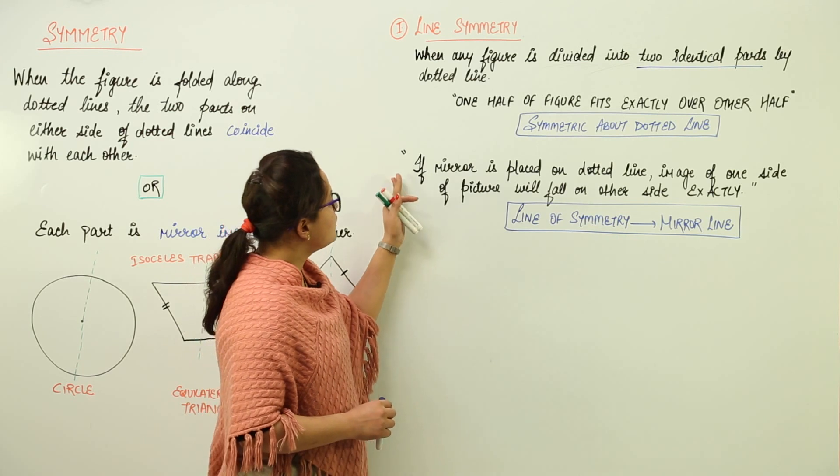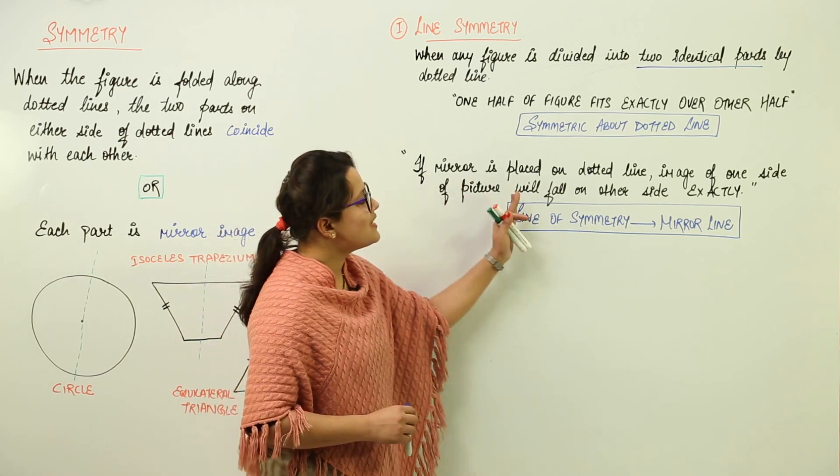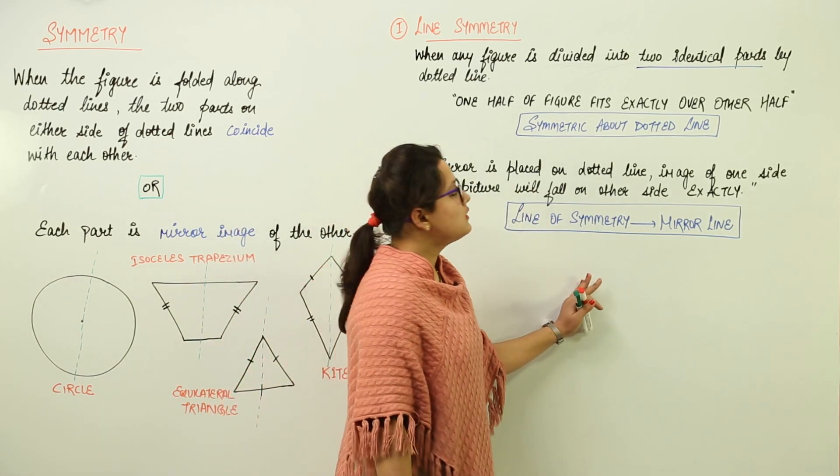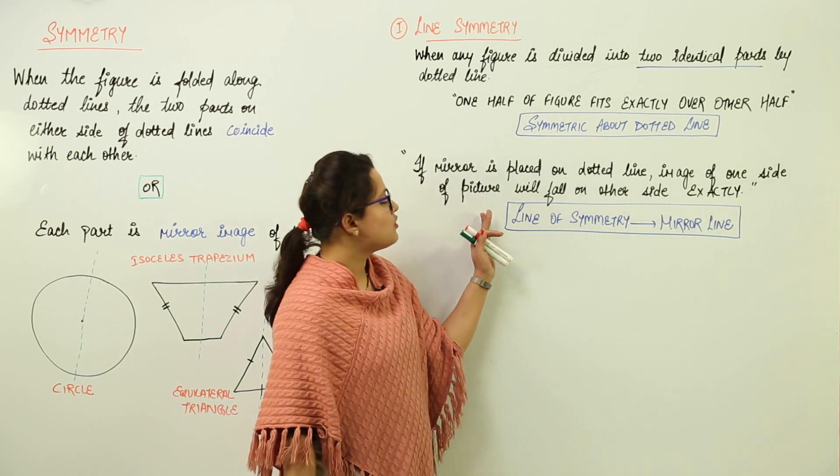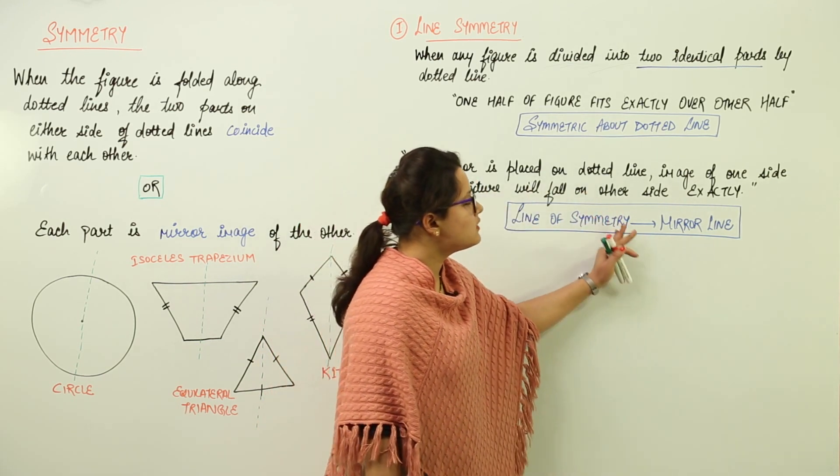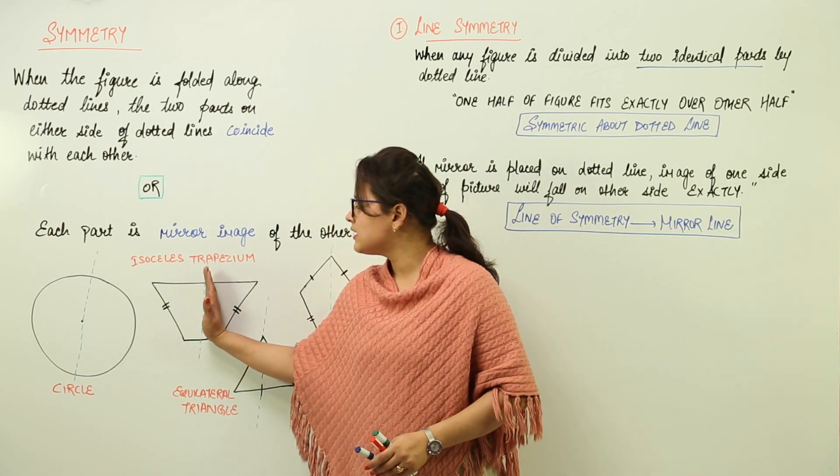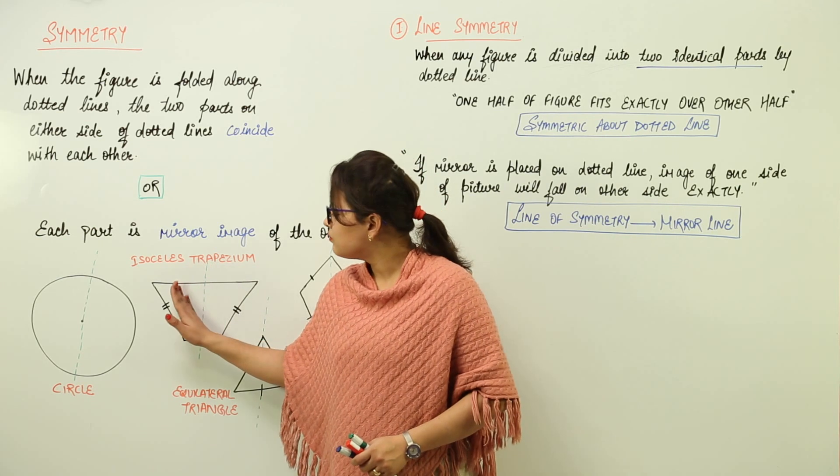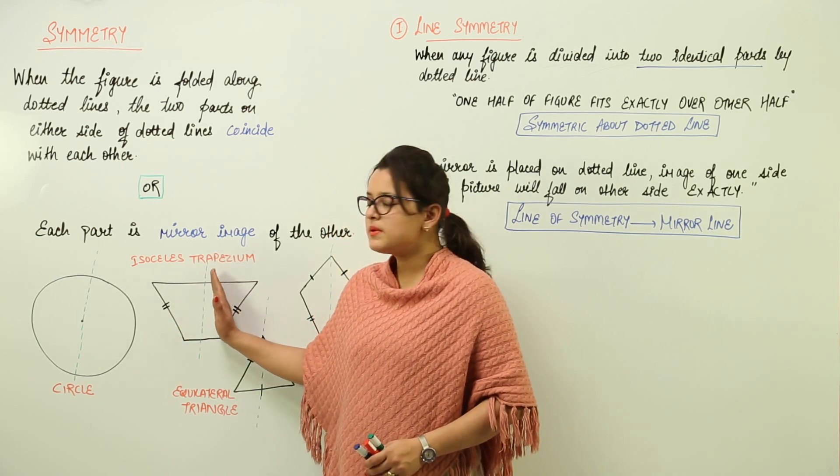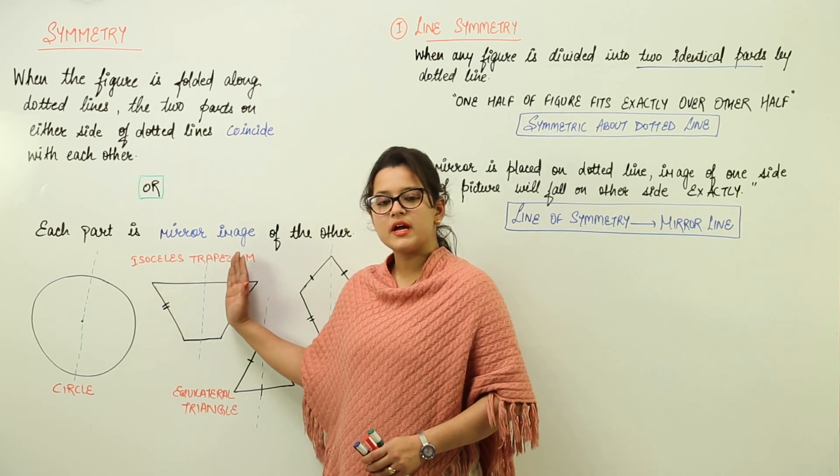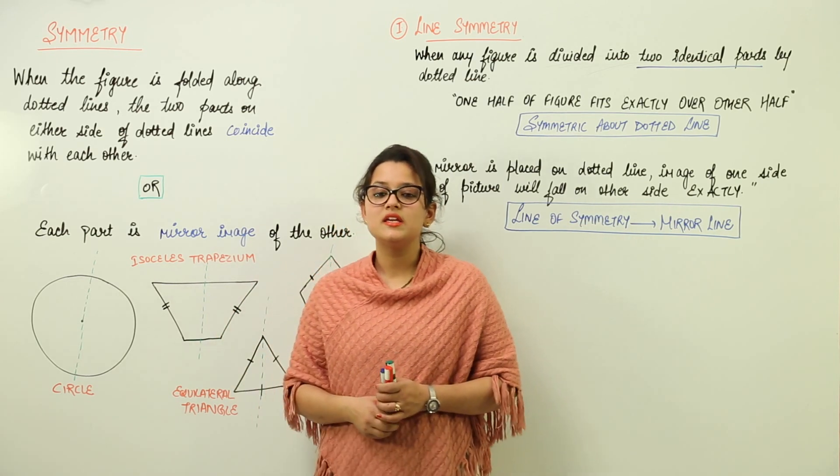Next, we have the conclusion: if a mirror is placed on the dotted line, the image of one side of picture will fall on the other side exactly. If you place a mirror on this dotted line, you're going to find that one part must be having the image such that they will be fitting exactly each other.